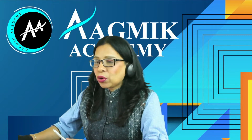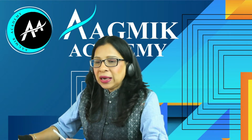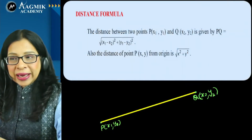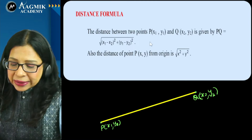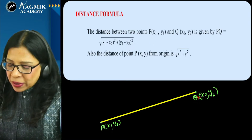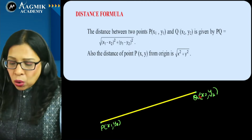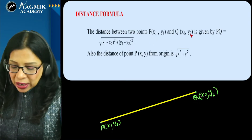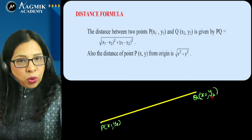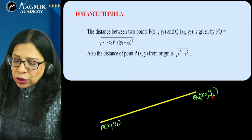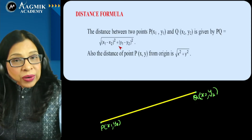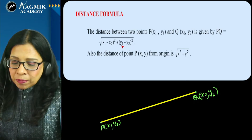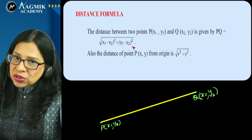So first of all, let's look at the distance formula. If we talk about two points P and Q, where P has coordinates (x1, y1) and Q has coordinates (x2, y2), you know that the distance formula is given by PQ equals under root of (x1 minus x2) whole square plus (y1 minus y2) whole square.